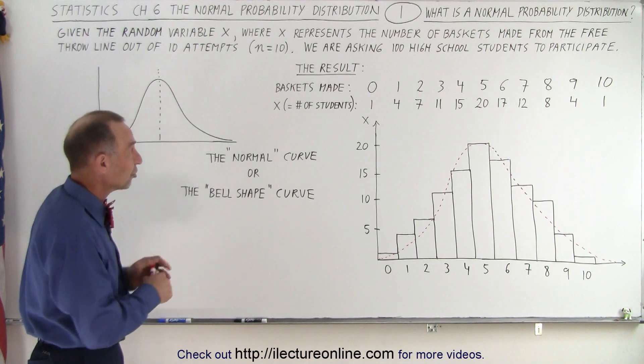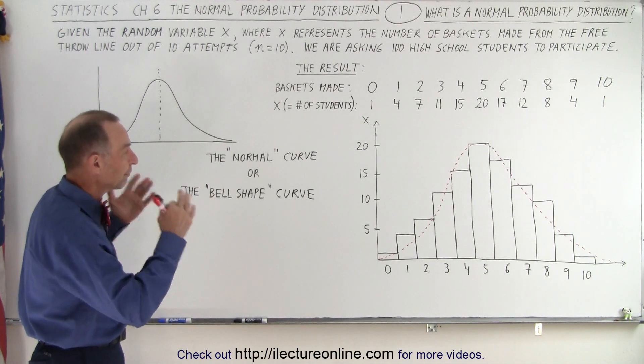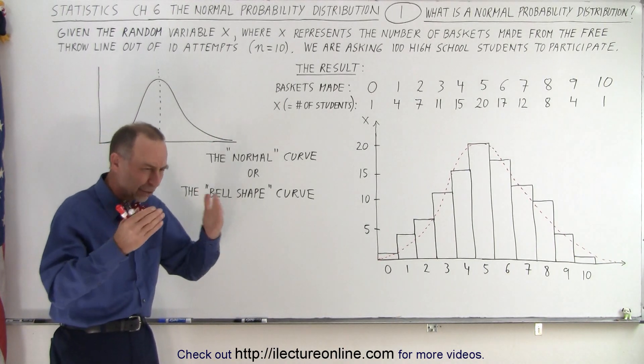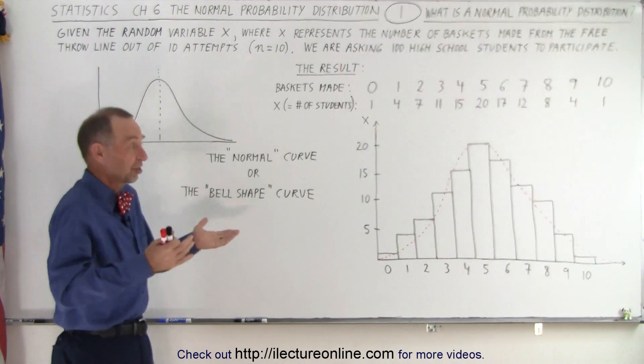So that's what we're going to do in this chapter. We're going to look at all the various aspects of what a normal probability distribution is, how to calculate it, how to calculate a certain probability.